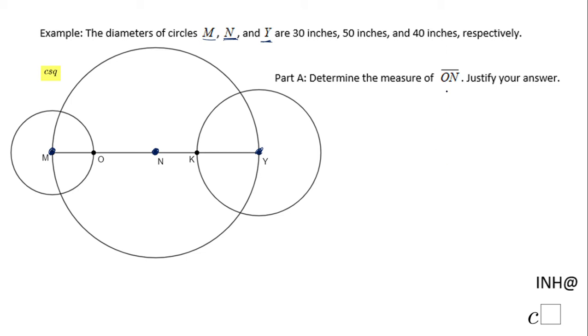We have to in Part A find the measure of ON and how long ON is. You notice ON starts from here and ends right here. If you notice, ON that segment plus this segment MO are equal with this segment. You put them both together and we get MN. This is called the ruler postulate.